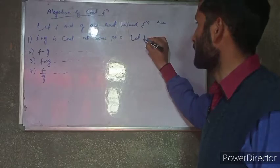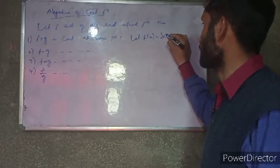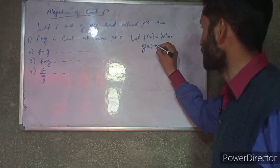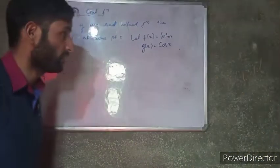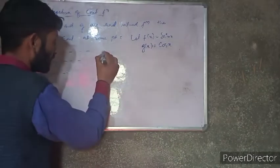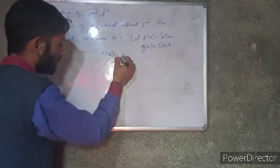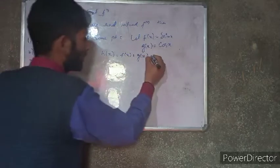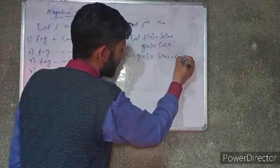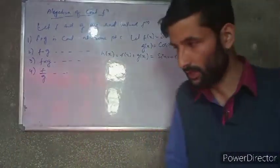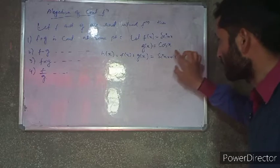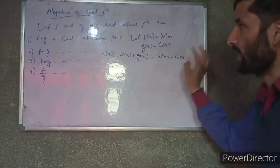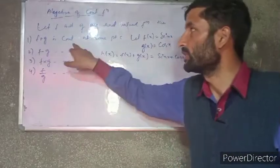Let us suppose two examples. Let the two functions be f of x equal to sin x and g of x. If x is equal to 3, then this is a continuous function. This is f plus g, which is also a continuous function.